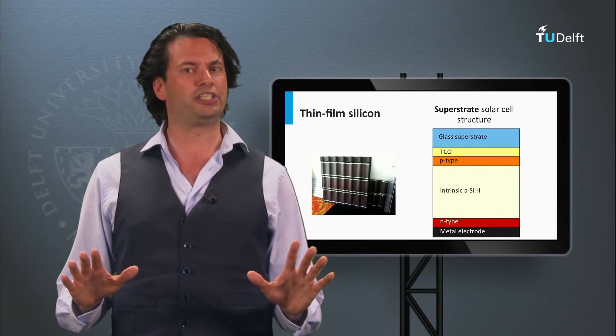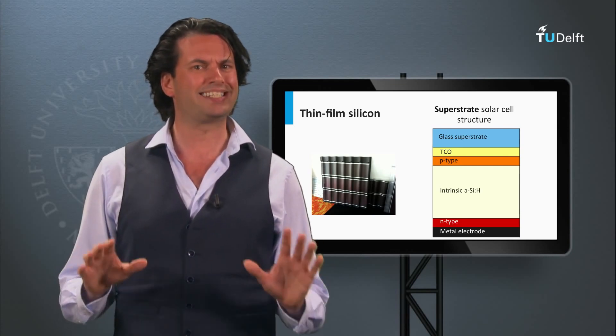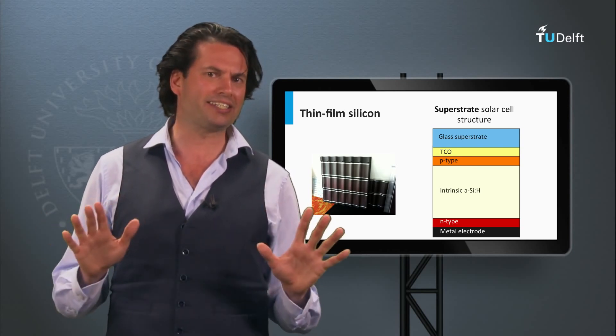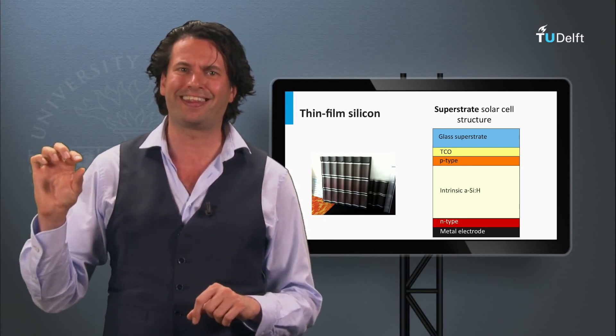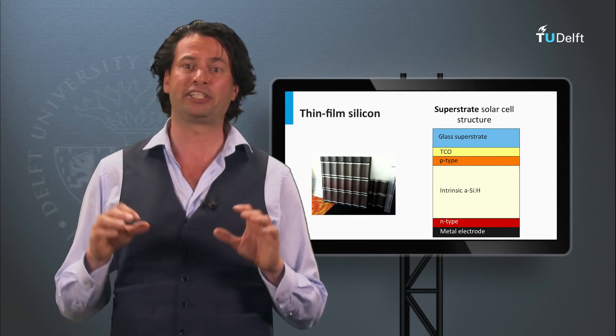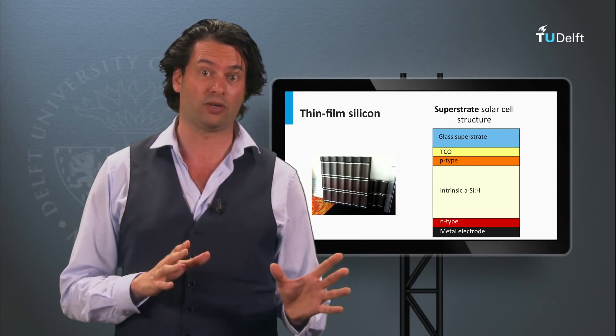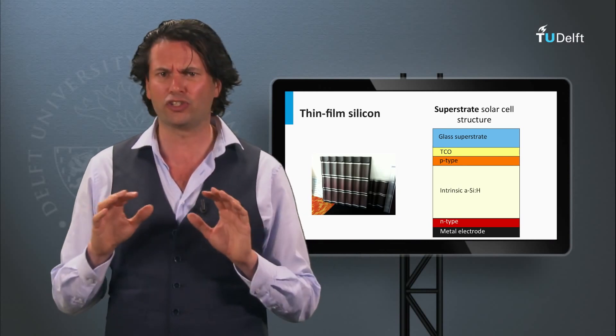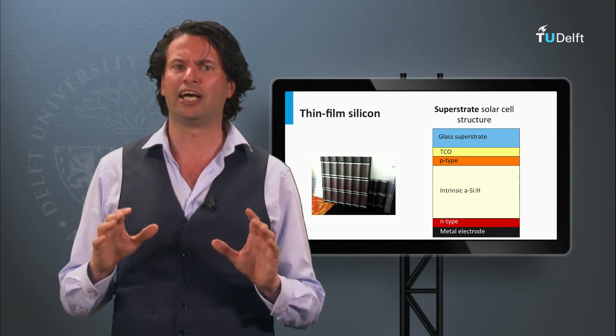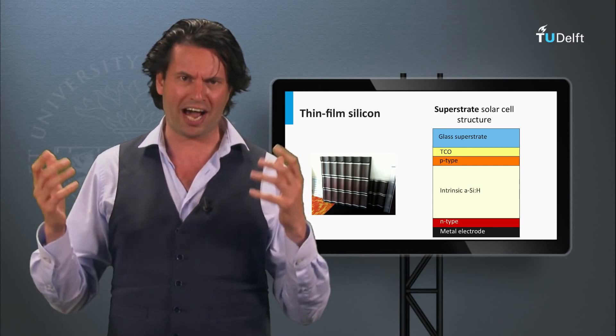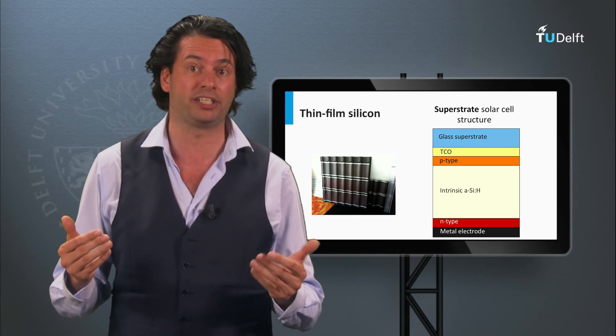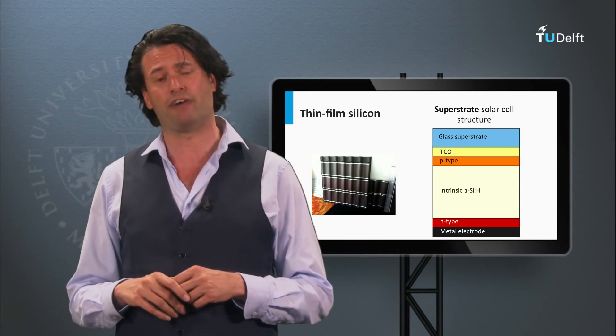Another PV technology based on silicon is thin film silicon. In this case, no crystalline silicon wafers are used, but very thin layers of silicon, which are deposited on glass or a flexible substrate. The silicon does not have the same lattice structure and can be amorphous or nano-crystalline. This technique belongs to the second generation PV technology and will be discussed in week 5.